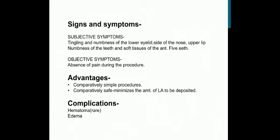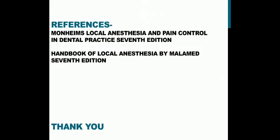The signs and symptoms are: subjective symptoms include tingling and numbness of the lower eyelid, side of the nose, and upper lip, as well as numbness of the teeth and soft tissue of the anterior five teeth. The objective symptom is absence of pain during the procedure. The advantages of the infraorbital nerve block are that it is a comparatively simple and safe procedure and minimizes the amount of local anesthesia deposited. The complications include hematoma, which is very rare, and edema.